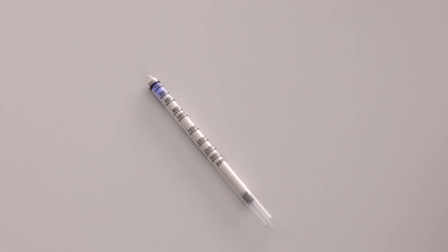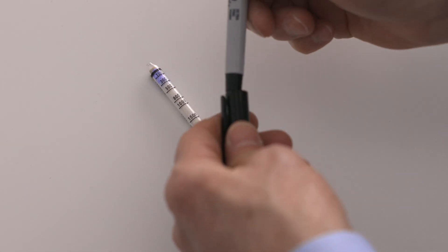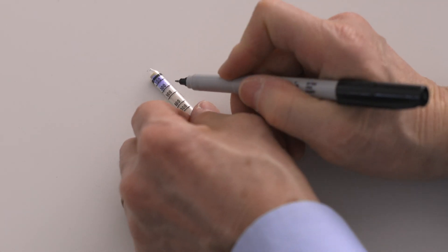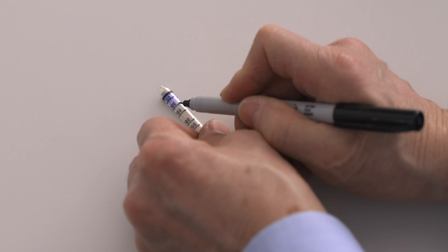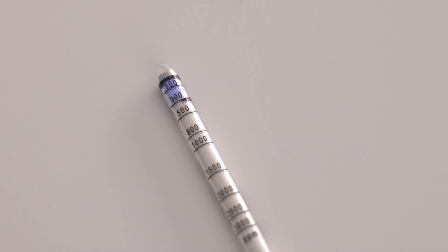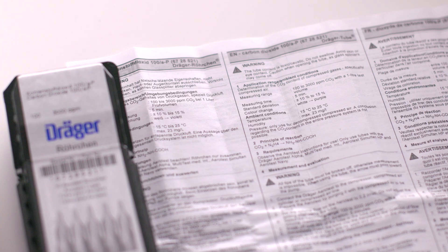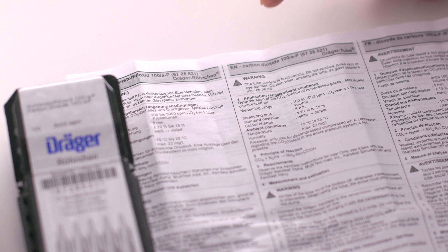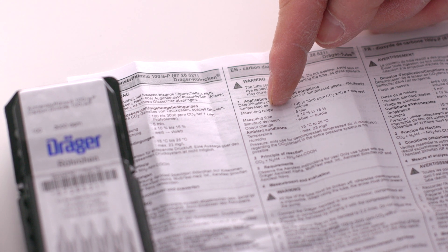Start with the carbon dioxide tube. Using an indelible marker, mark the end point of the bluish-violet discoloration. Always read the total length of the slightest discoloration on a detector tube. In this case, the discoloration reached 300 ppm. There are instructions for reading the results inside the package of each tube.